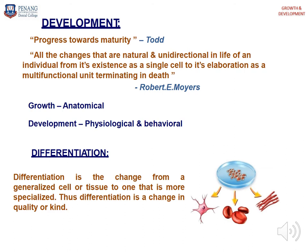What is development? By Tost, development is a progress towards maturity. From Moyes, development is all the changes that are natural and unidirectional in the life of an individual from its existence as a single cell to its elaboration as a multi-functional unit. The difference between development and growth is that growth is more anatomical and development is more physiological and behavioral. Differentiation is a change from a generalized cell or tissue to one that is more specialized — a change in quality or kind.